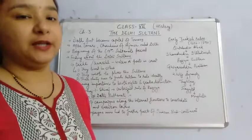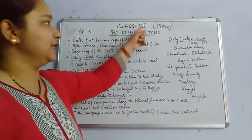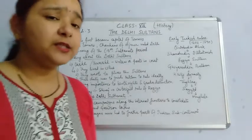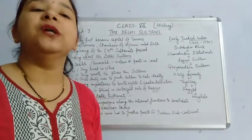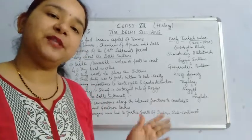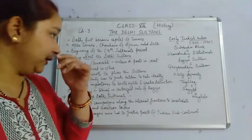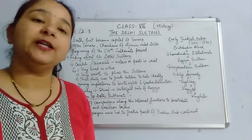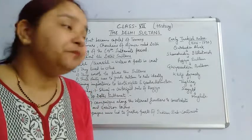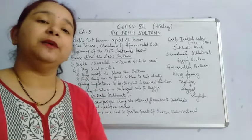Hello everyone and welcome to my class. Today in this video I will be starting the third chapter of Class 7 History, that is the Delhi Sultans. This year you will be studying only about the medieval history of India. We are covering the time period from 700 to 1750 AD, and in the previous chapter I have already discussed how new kings formed their kingdoms in India.